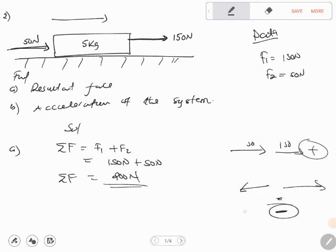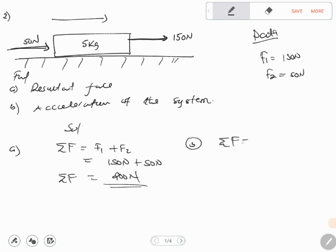How do you find the acceleration from the resultant force? F equals ma. This is the formula to use. Resultant force is 200, mass is 5, acceleration is a. We divide both sides by 5 to get acceleration. This will give us 40 meters per second squared. These are some of the questions which they can bring.